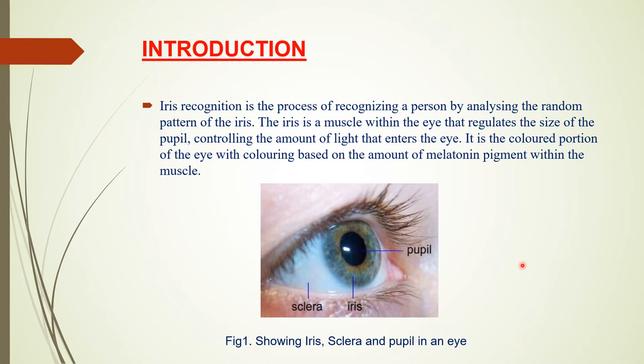So what is iris recognition? Iris recognition is the process by which a person is identified using his or her iris patterns. In this image you can see that the black portion is known as the pupil, the colored portion is the iris, and the white portion is the sclera. If we talk about the functionality of the iris, it regulates the size of the pupil, controlling the amount of light entering the eye.